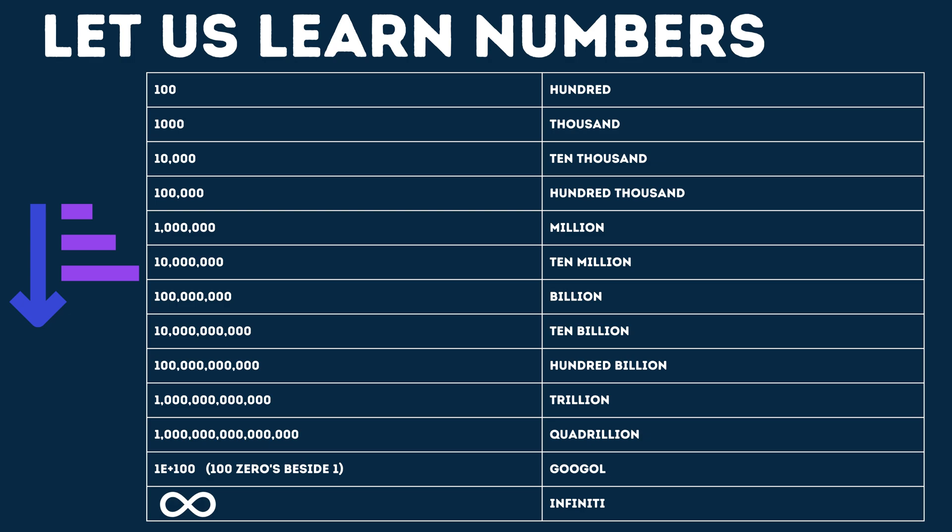Oh, we are learning very big numbers! Then 10 billion, 100 billion. The next big number is trillion. After that, quadrillion — 15 zeros after 1 makes quadrillion. Then there is the Googol — 100 zeros after 1, such a big big number! We rarely use quadrillion and Googol in real life.